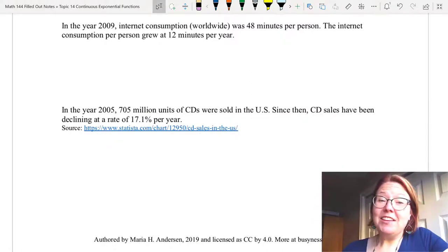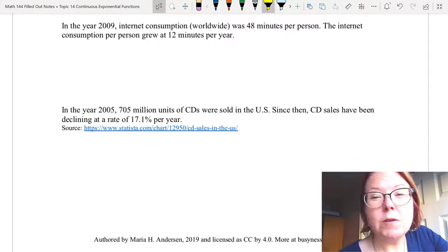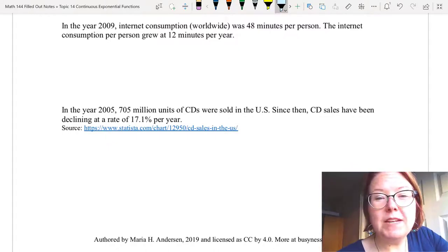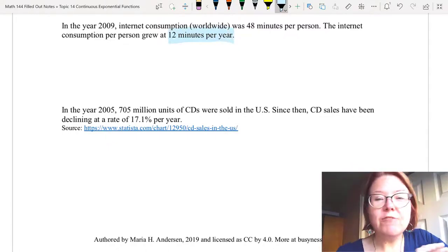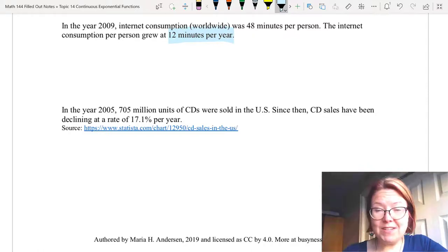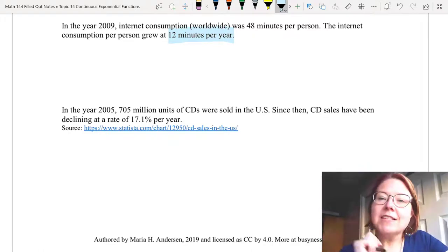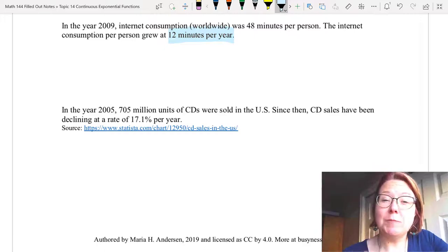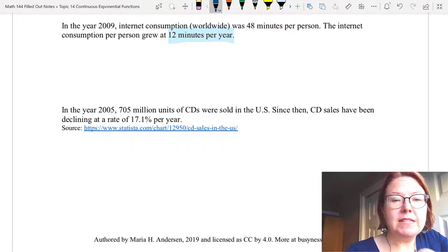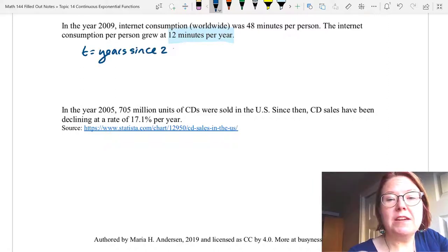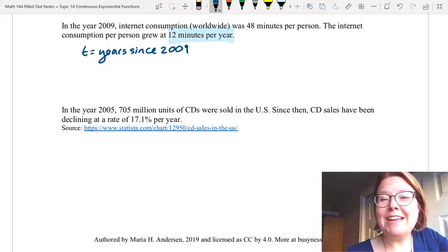Second scenario. In the year 2009, internet consumption worldwide was 48 minutes per person. The internet consumption per person grew at 12 minutes per year. Important words here, this 12 minutes per year. Notice we have no percentages in this problem. We have a fixed quantity of growth. And this indicates to us this is a linear model. Let's let t be the years since 2009, and that way we can use the 48 minutes as the y-intercept.